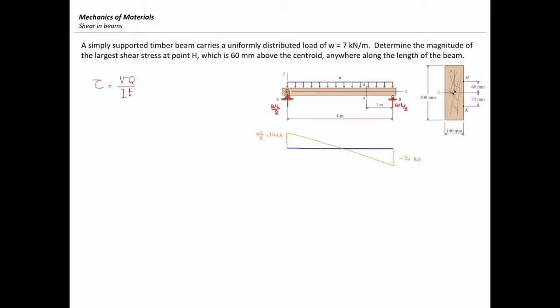In the first part, I want to determine the maximum shear stress everywhere in the beam at point H. So I should work with V_max, the maximum shear force, which is 14 kilonewtons. Section AA is located 1 meter to the left of support B, and using similar triangles we can determine the shear force at that point is equal to 7 kilonewtons. In shear stress analysis, the sign of shear force doesn't matter, so I will simply write it as 7 kilonewtons.